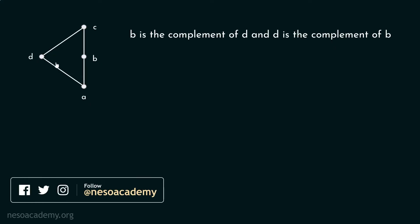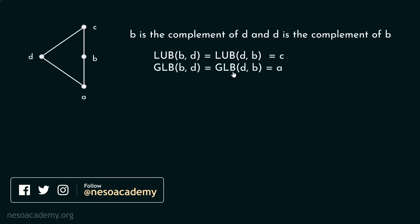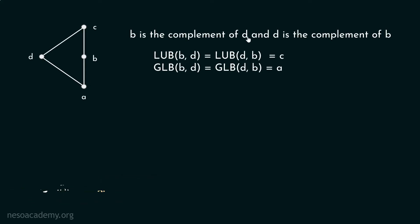The least upper bound of B and D is equal to C, and the greatest lower bound of D and B is equal to A. Therefore, B is the complement of D and D is also the complement of B.